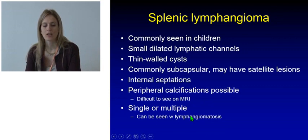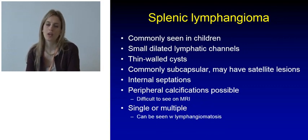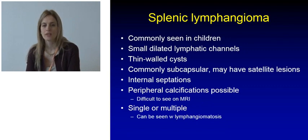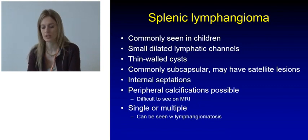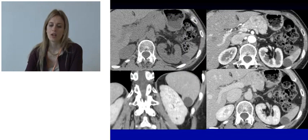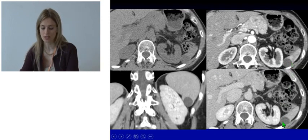Splenic lymphangioma is commonly seen in children and is due to a dilation of small lymphatic channels which form thin-walled cysts. They are typically subcapsular and there may be satellite lesions. These lesions usually have internal very thin septations and they can show peripheral calcifications. As we can see in this example, there is a subcapsular lesion with thin walls that do not enhance — this is the typical location and appearance of lymphangiomas on CT.